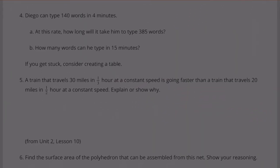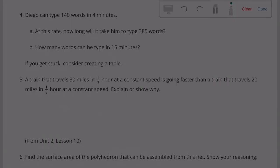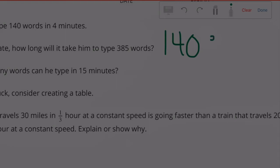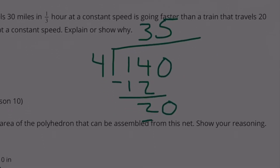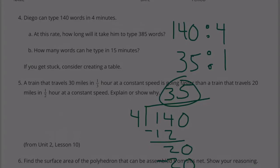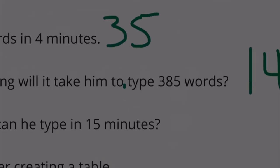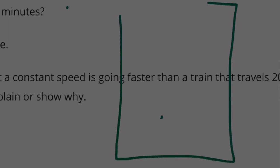Number four: Diego can type 140 words in 4 minutes. At this rate, how long will it take him to type 385 words? First, I want to figure out how many words Diego can type in 1 minute. 140 words to 4 minutes — divide the 4 by 4 to get 1, so divide 140 by 4 to get 35 words in 1 minute. Let's use a chart.